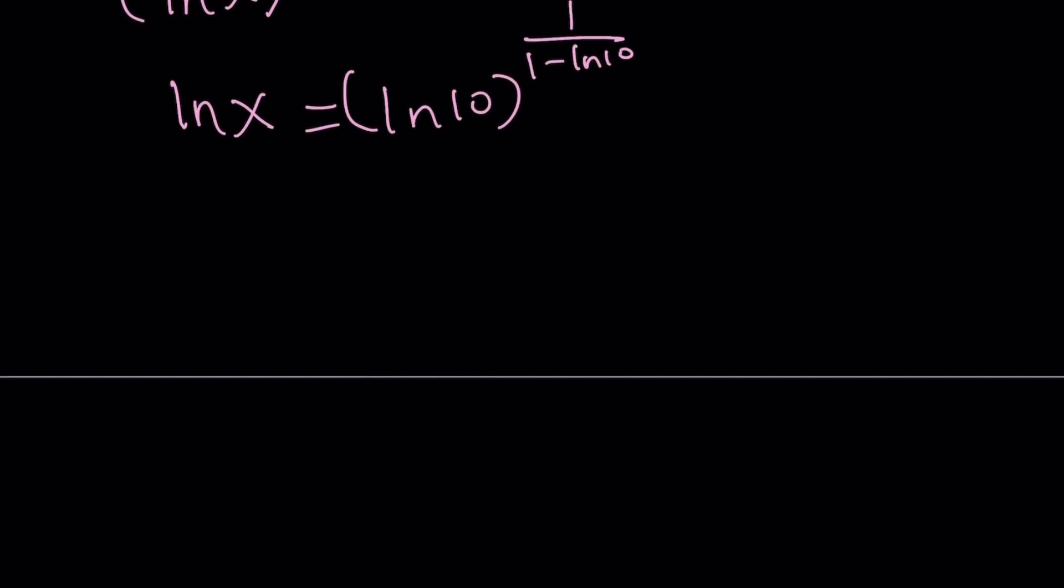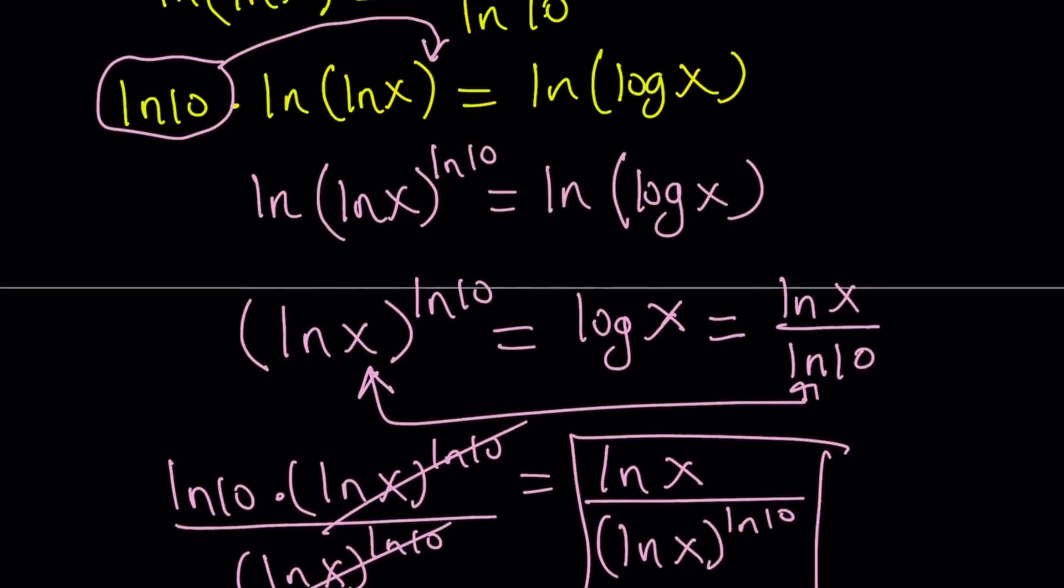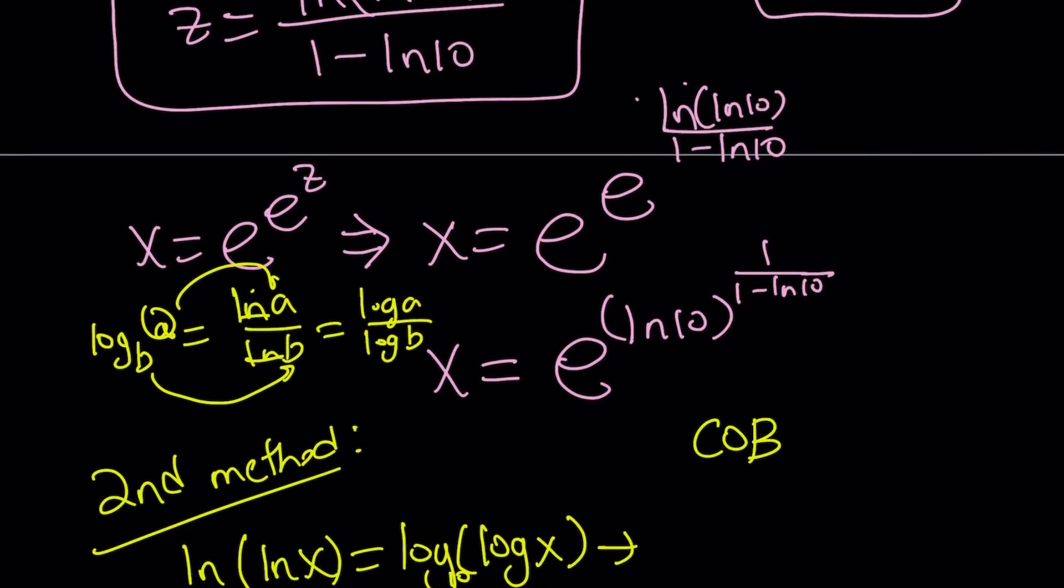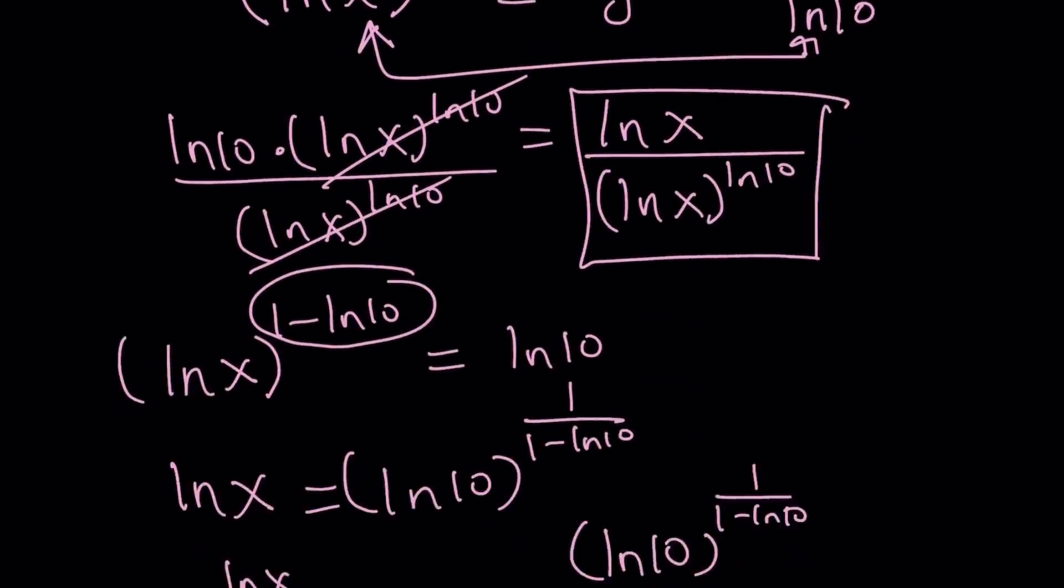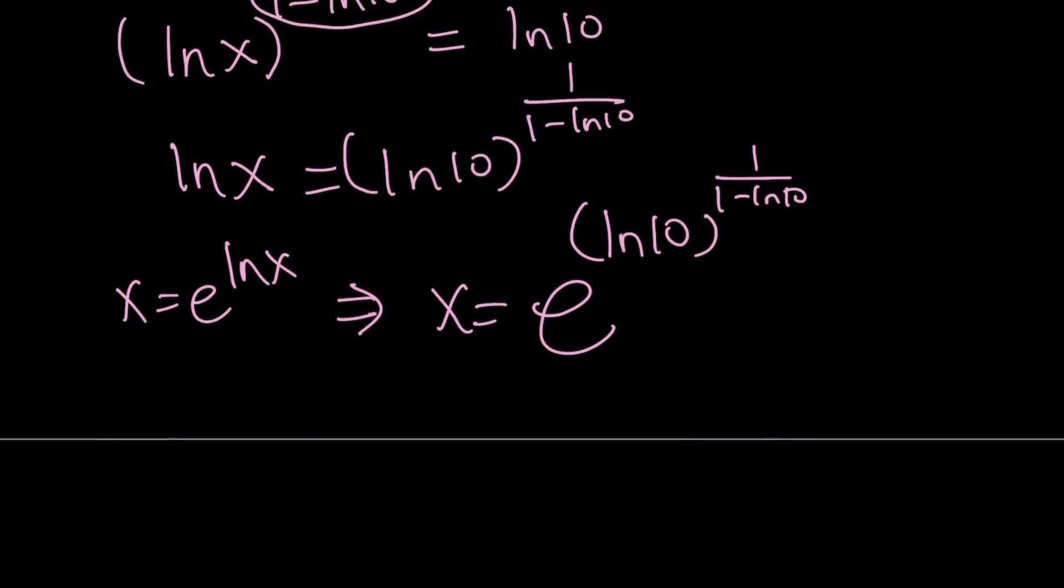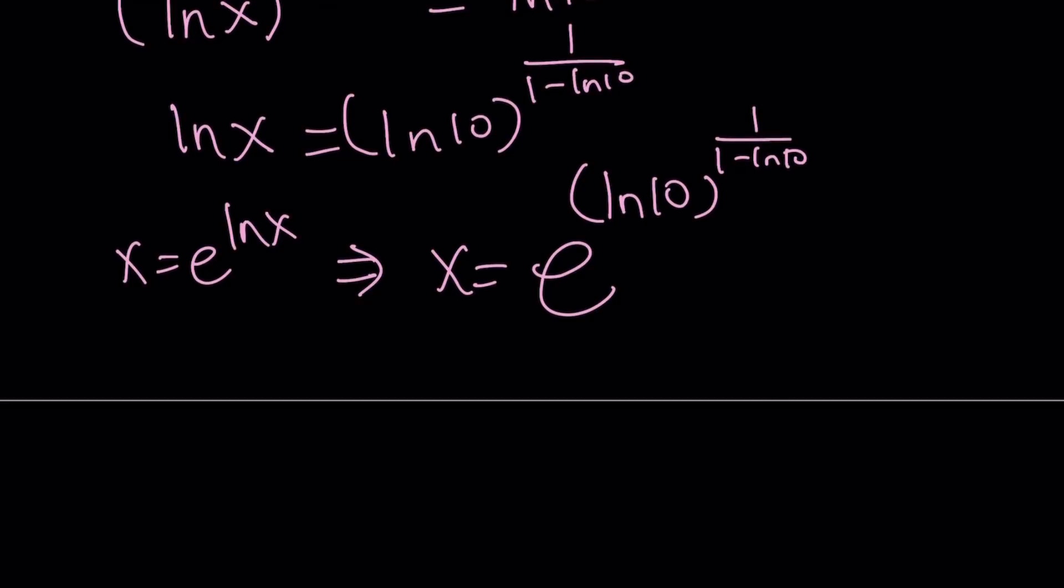But this is just ln x. And as you know, x is equal to e to the power ln x. Therefore, x is going to be e to the power ln 10 to the power 1 over 1 minus ln 10. And remember our expression when we had it first, we had it like this. It was kind of weird, but then we turned it into this one. And you notice that we get the same solution regardless. And we should always be getting the same solution even when we use different methods.